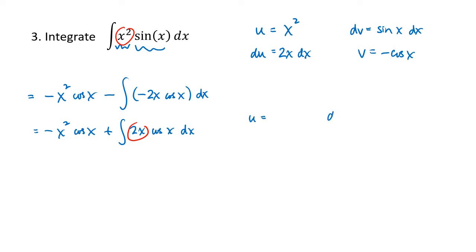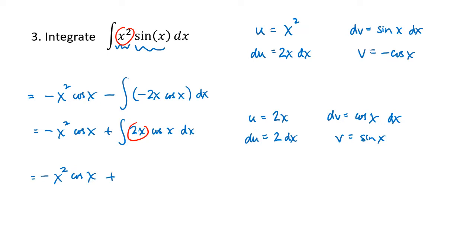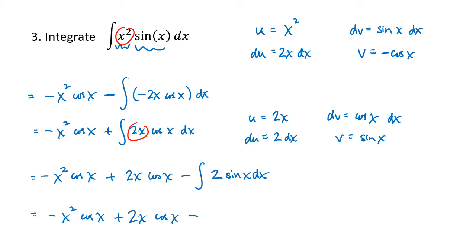This is an example where we need to use parts again. If you're ever doing parts multiple times, continue choosing your parts in the same way — choosing the opposite way would get you back to your original integral. So the polynomial 2x is our u again, and cosine x is our dv. du is 2 dx, and v is sine of x. We still have the x squared cosine x term, but this integral becomes 2x sine x minus the integral of 2 sine x dx. Pulling out the 2, the antiderivative of sine is negative cosine, so that minus turns into a plus: 2 cosine x, plus c. And now we're done.